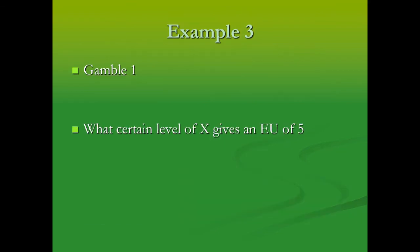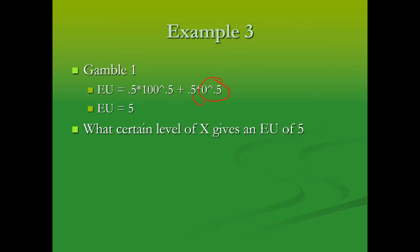Consider gamble one. The first step is to find the expected utility. Gamble one has a 50% payoff of $100 and a 50% payoff of zero. We take those payoffs, plug them into the utility function — we're using the square root of X, or X to the one-half power — multiply them by the corresponding probabilities, add them together, and we get the expected utility. Here we get an expected utility of five. But when doing the certainty equivalent, we don't stop there.